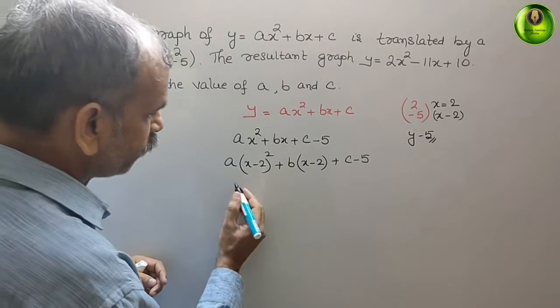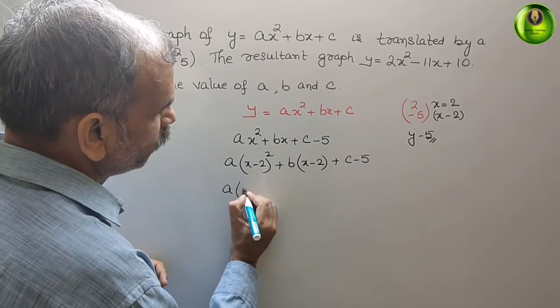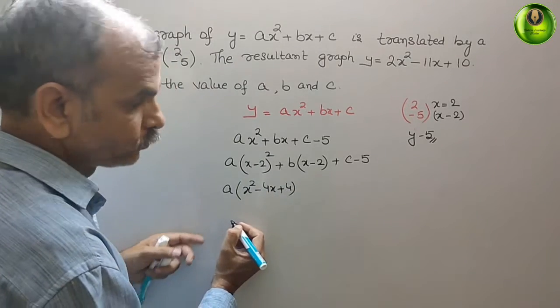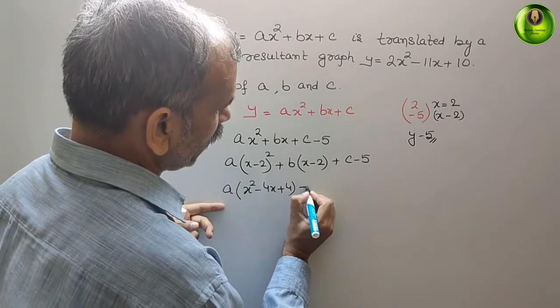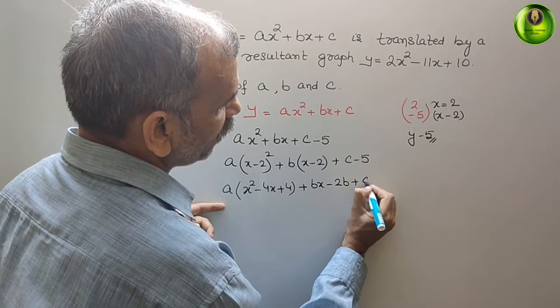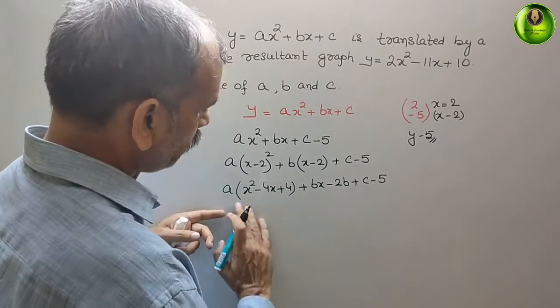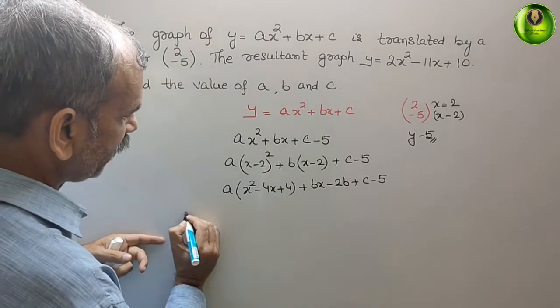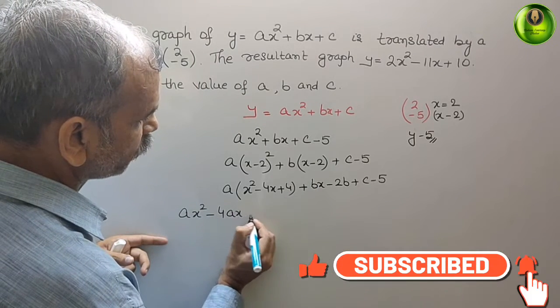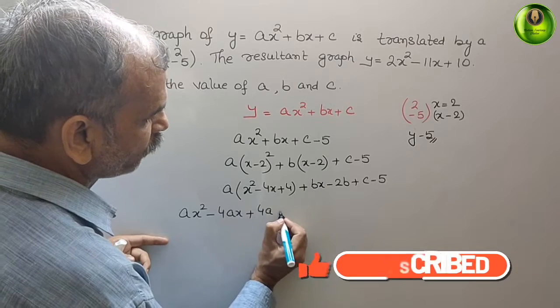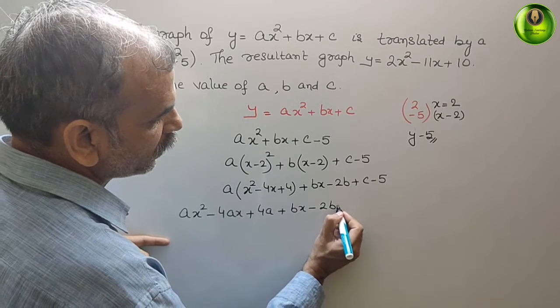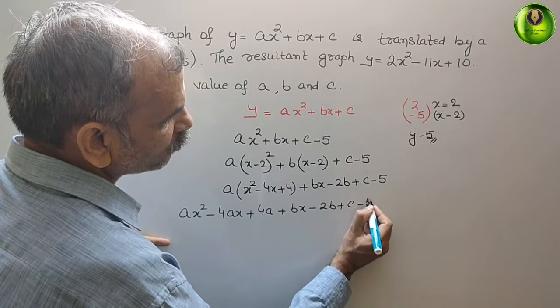Solve this. What we will get? A into x² minus 4x plus 4, and this will be plus bx minus 2b, plus c minus 5. Open the bracket. We will get ax² minus 4ax plus 4a plus bx minus 2b plus c minus 5.